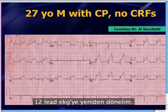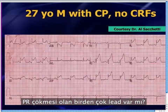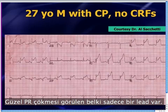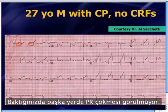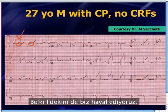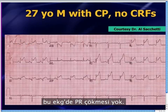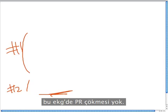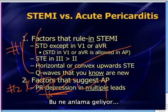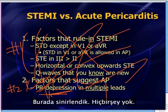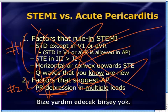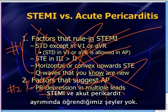Going back to the 12-lead: are there multiple leads with PR segment depression? Looking around, there's maybe one lead that has any PR segment depression — and maybe we're just imagining that. There's not much else showing PR segment depression. So this does not have PR segment depression either, meaning none of the typical tools for distinguishing STEMI versus acute pericarditis are helpful in this case.